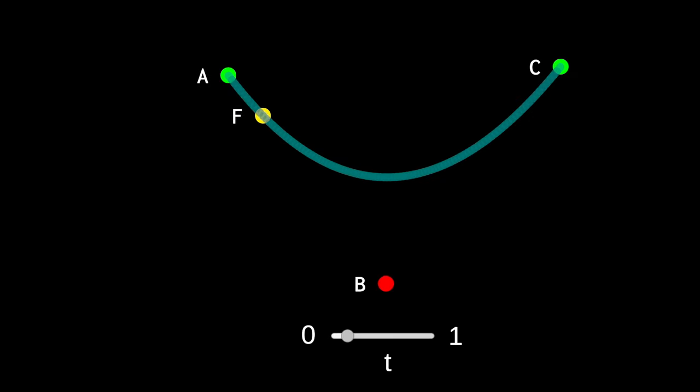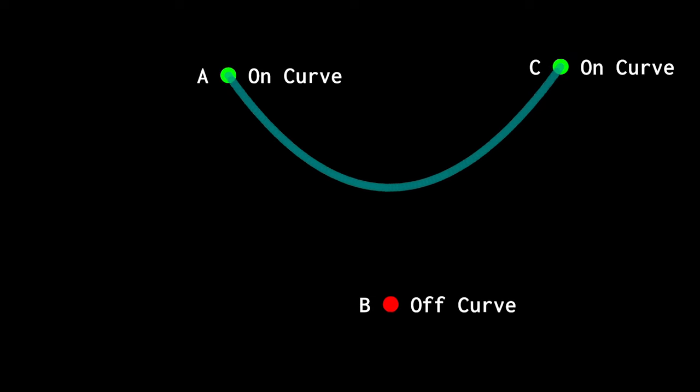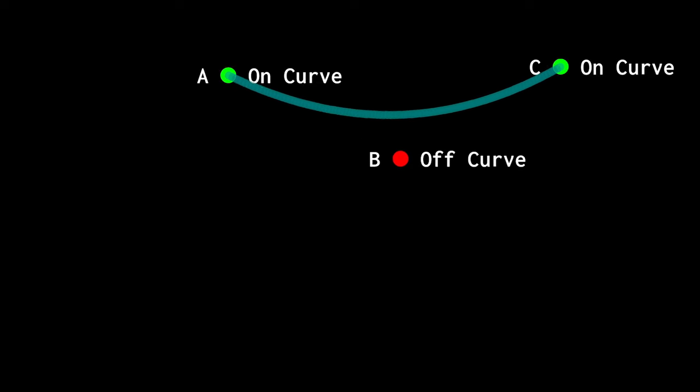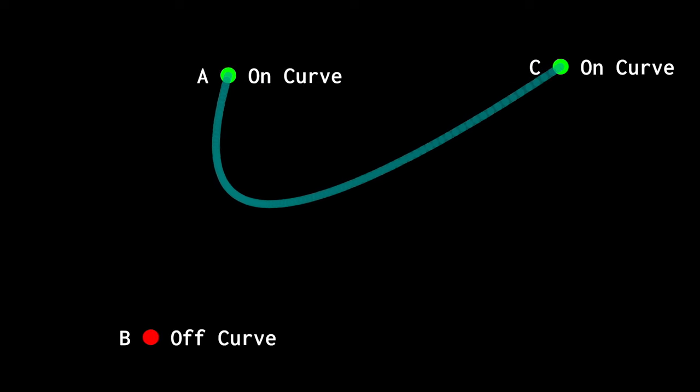You can see that the end points A and C lie on the Bezier curve. The middle point B is off the curve. I've colored the on curve points in green and the off curve point in red. If we go back to our Glyph, I've used the same colors to show the on curve and off curve points.